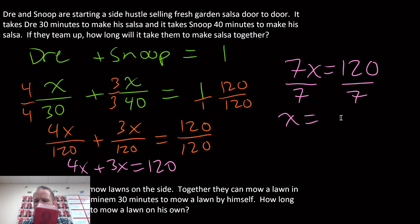I'm going to get X equals, I don't think this one's going to divide easy. Let me get the calculator. So we got 120 divided by 7 is going to give me 17.14 minutes. There we go, so if they team up, 17.14 minutes per jar, they're going to be crushing the salsa game. All right, let's get one more problem.